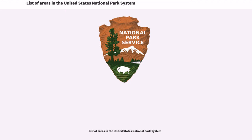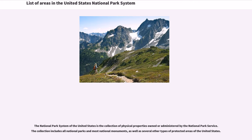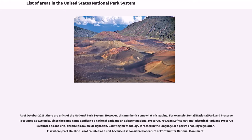The National Park System of the United States is the collection of physical properties owned or administered by the National Park Service. The collection includes all national parks and most national monuments, as well as several other types of protected areas of the United States. As of October 2018, there are numerous units of the National Park System.